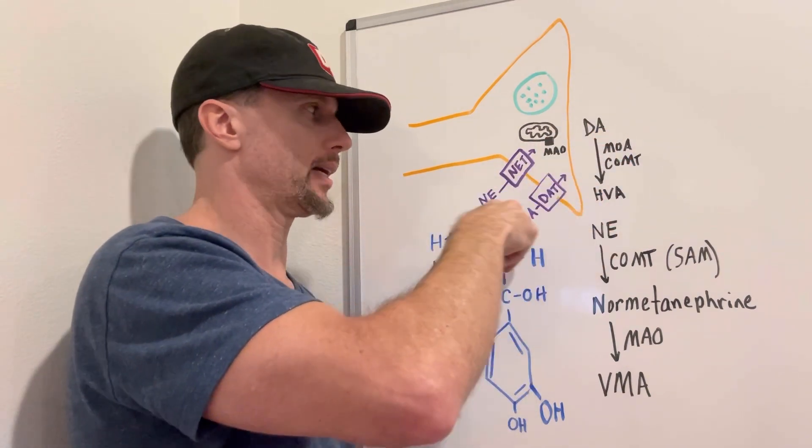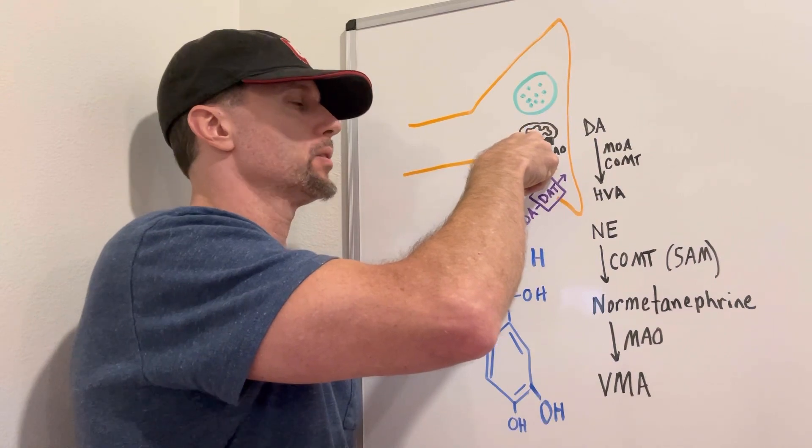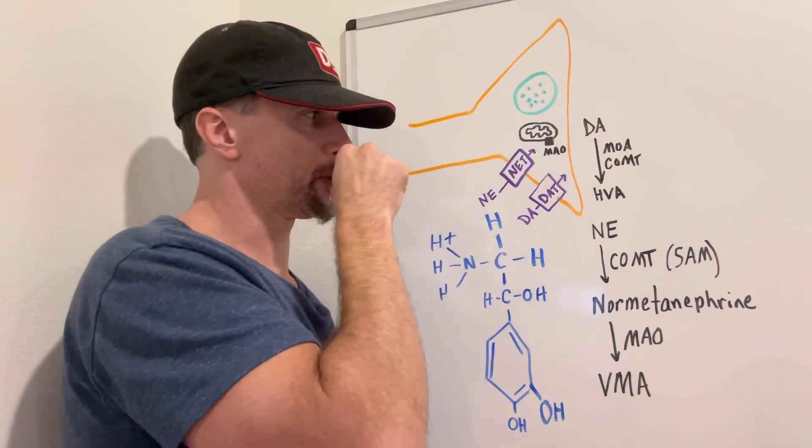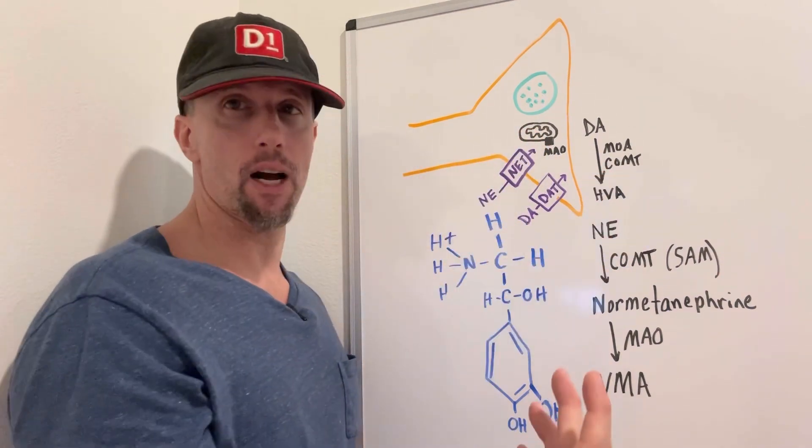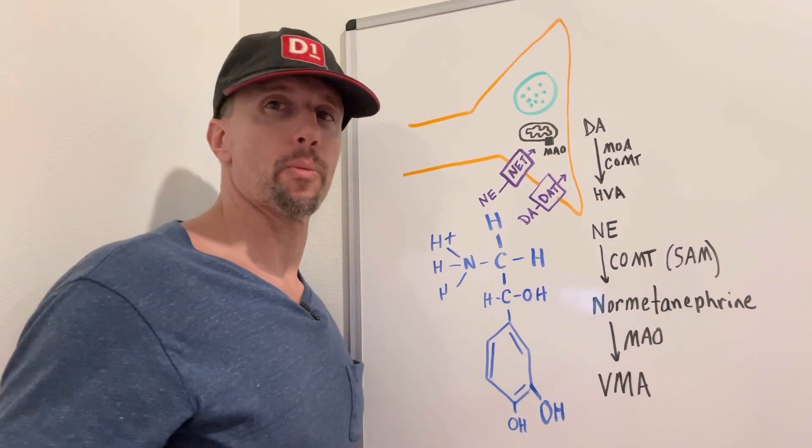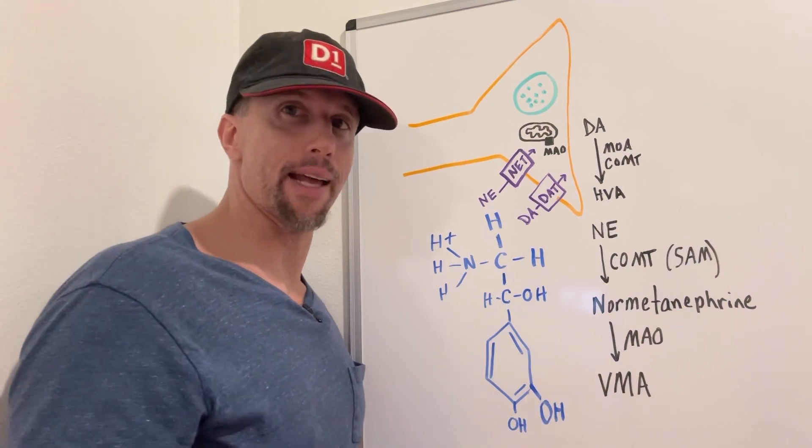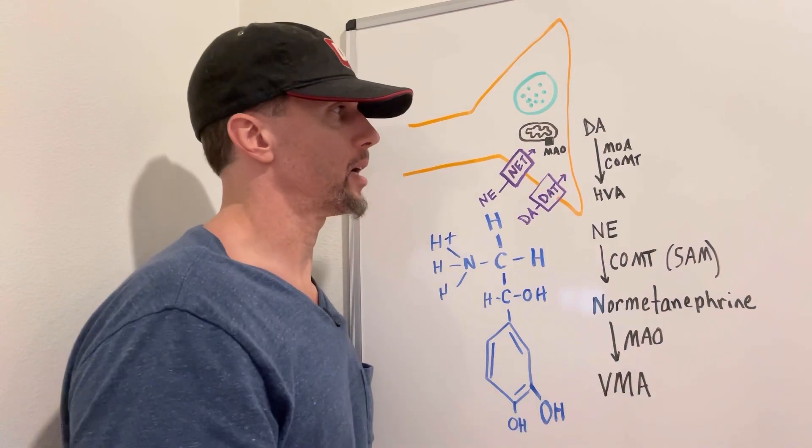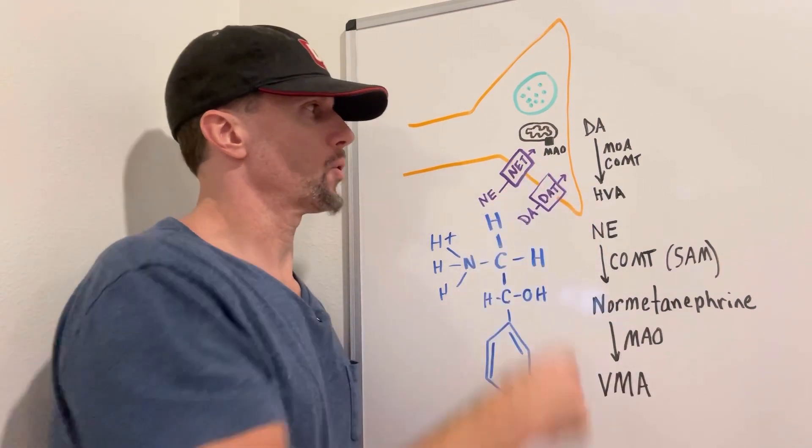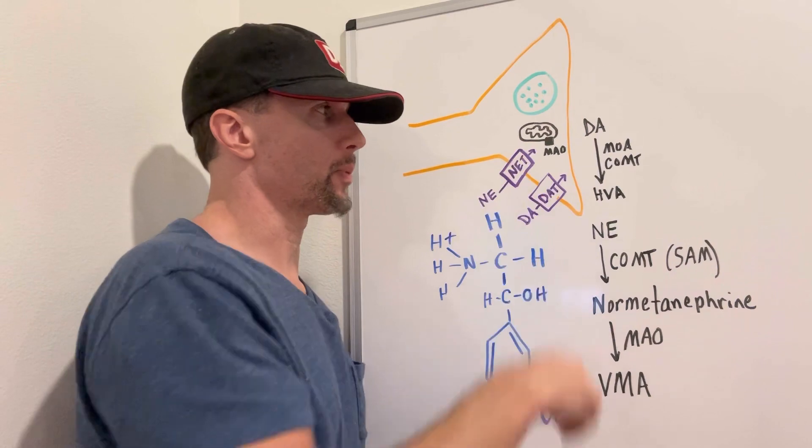Norepinephrine can do the same thing. It can move in its reuptake channel and move back into the nerve terminal. And right there in the nerve terminal, we have mitochondria, and that's where these monoamine oxidase enzymes reside, is on the outer membrane of the mitochondria. And so that will oxidize both norepinephrine and dopamine.